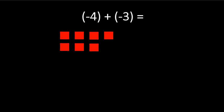So we have all the tiles drawn in. Since we are adding, we are simply going to count how many tiles we have all together. We have 1, 2, 3, 4, 5, 6, 7 — we have 7 tiles all together, so let's write down 7. Now since we have red tiles, and red means negative, we are going to add a negative sign in front of the 7. So negative 4 plus negative 3 is negative 7.